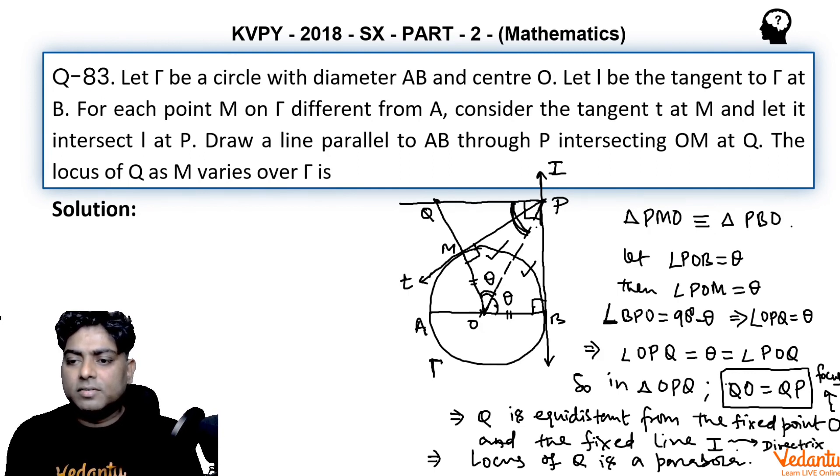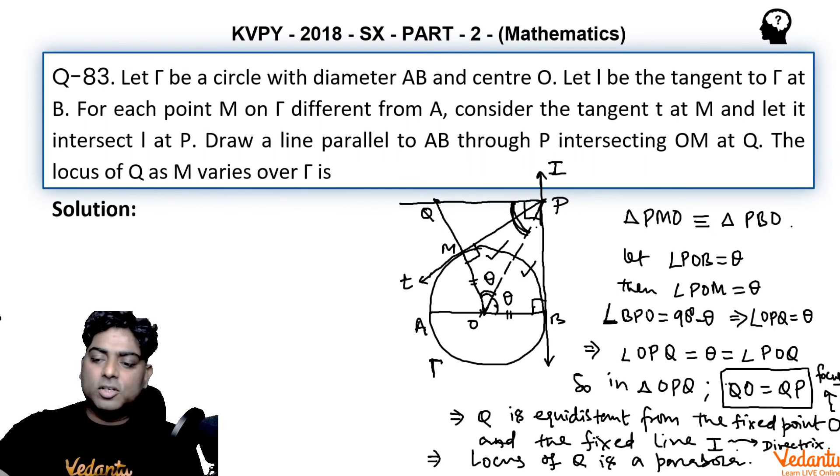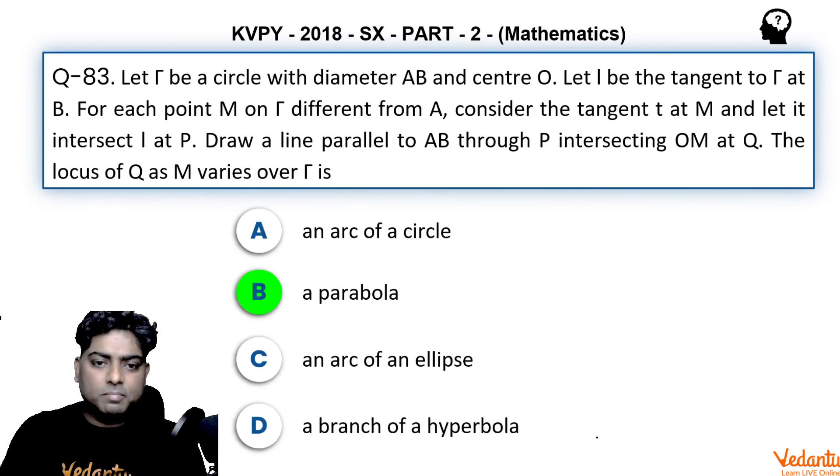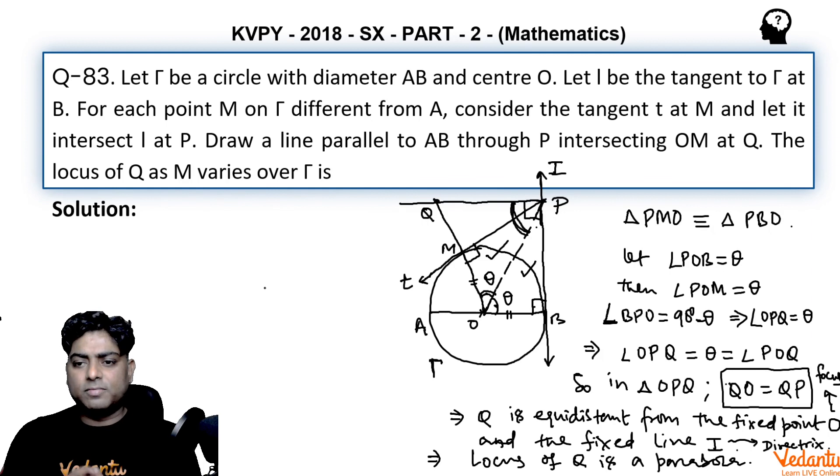Of this parabola, O will be the focus and I will be the directrix. This is very clear from the very definition of parabola. If a point is equidistant from a fixed point and a fixed line and it is moving, it will trace a parabola.